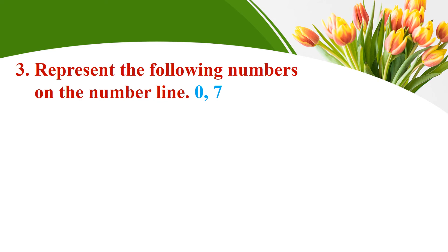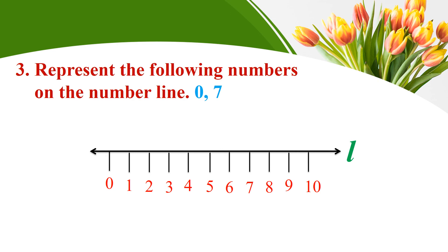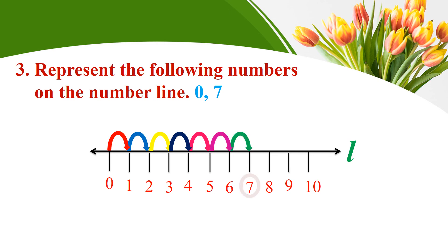Represent the following numbers on a number line: zero and seven. Draw a straight line called L and write numbers at equal distance from zero to ten. Mark zero first. Then to mark seven, move from zero to one, one to two, two to three, three to four, four to five, five to six, and six to seven. Mark that point — seven is represented on the number line.